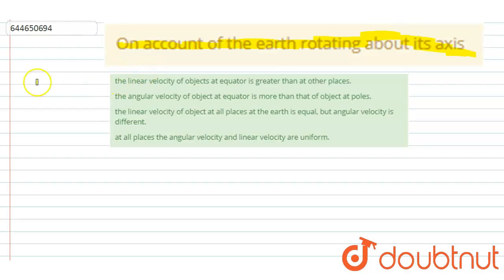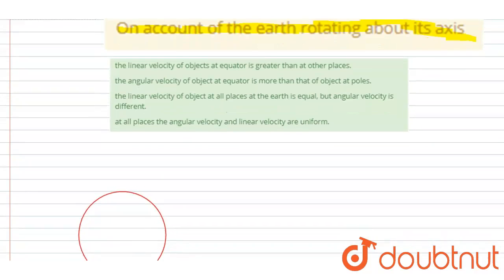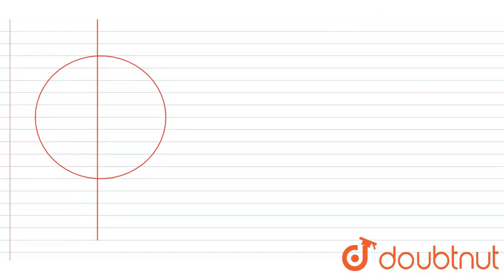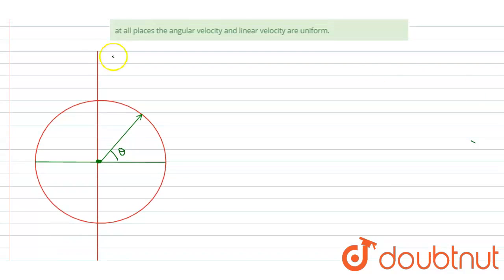On account of Earth rotating about its axis, you have to check which option out of A, B, C, D is the correct one. If I draw the Earth like this, this is the axis of rotation, this is the equator, and I make a position at an angle theta with the equator. The Earth is rotating about this axis at an angular speed of omega, and this is the radius of the Earth.